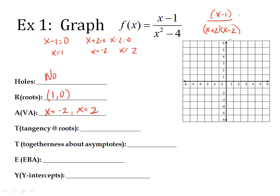Now, tangency. I'm looking at the factors in the top of the fraction. Are they squared? No, they're not. So I have no tangency. It's not going to bounce anywhere. Togetherness about the asymptotes. Are any of the factors in the denominator squared? No. Once it's factored out, they are not squared. So I have no togetherness here.